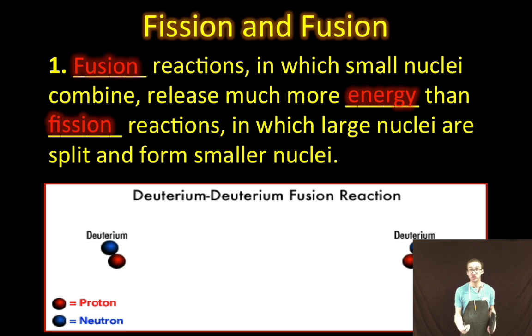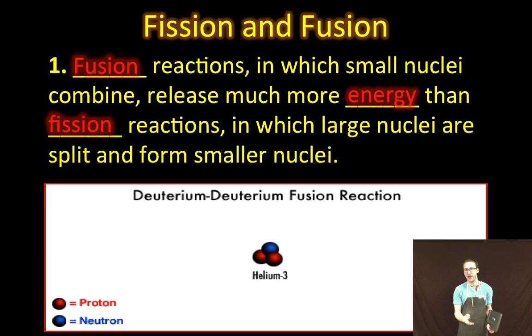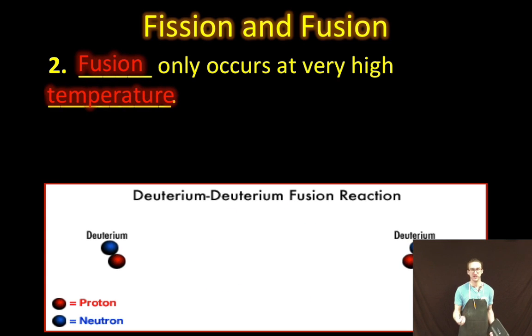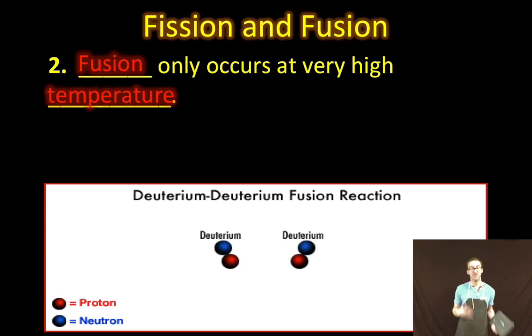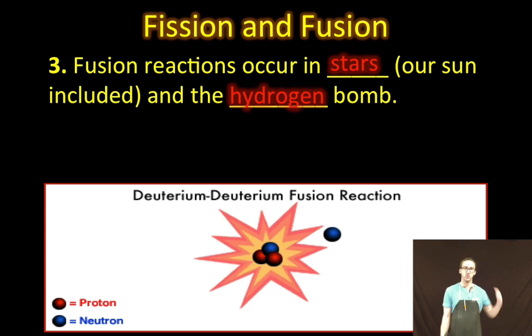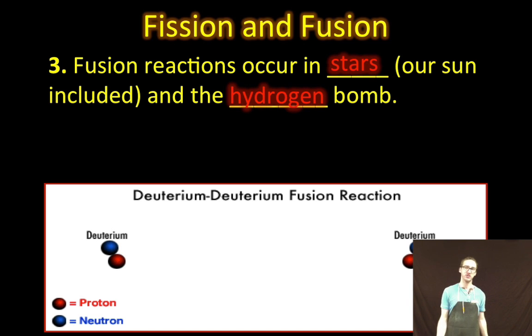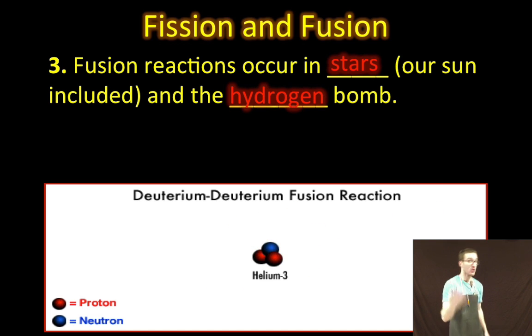Fusion would be, essentially, the holy grail of our energy needs. We could figure out a way to harness a fusion reaction. We could power our lives in a very clean way. Now, fusion only occurs at very high temperatures. Part of the reason why it's so difficult to successfully contain a fusion reaction is to contain really high temperatures. In fact, you have to use a fission reaction in order to get a fusion reaction to even get started. So, we do know that fusion reactions occur in stars, our sun included, and the hydrogen bomb. So, we have been able to recreate a fusion reaction, just not a controlled fusion.